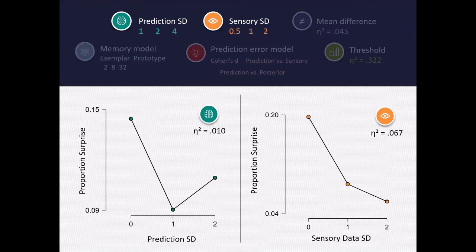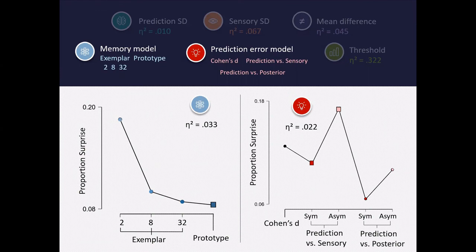Importantly, threshold matters more than misestimating the uncertainty in your prediction or your data. Models of memory and prediction error models did not produce any noteworthy effect sizes.